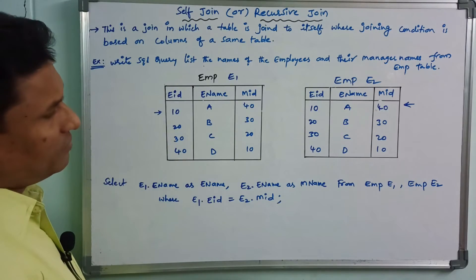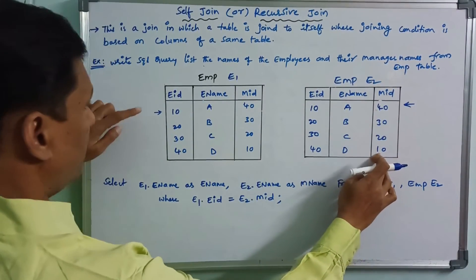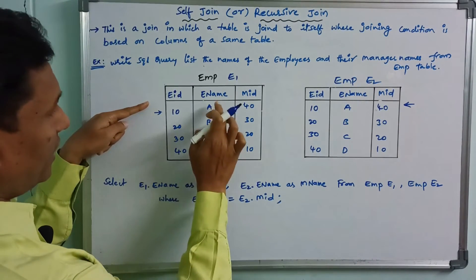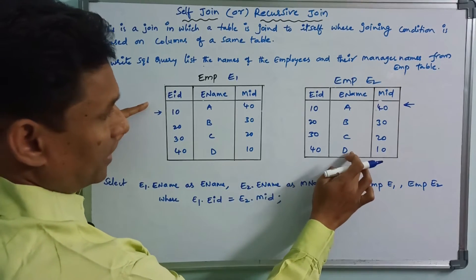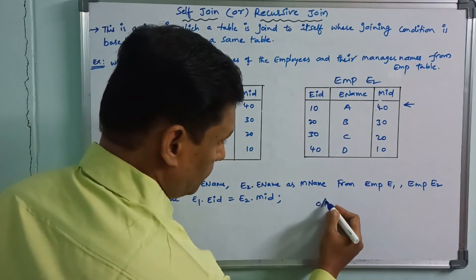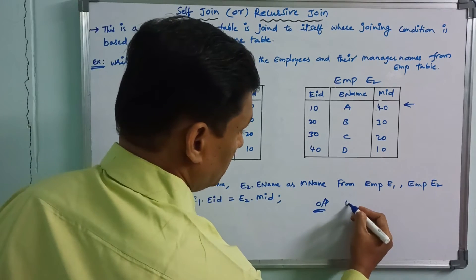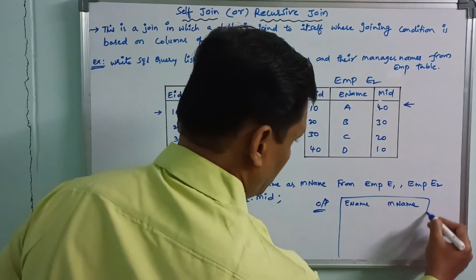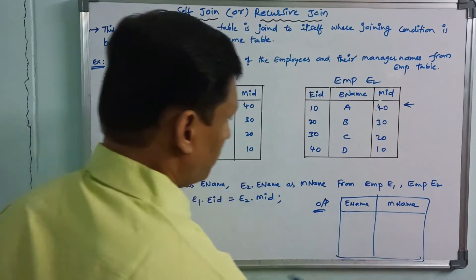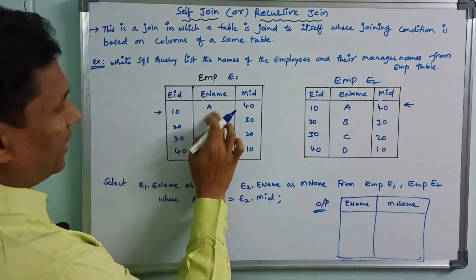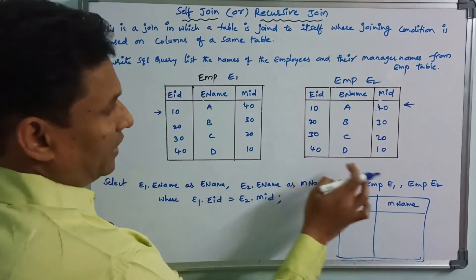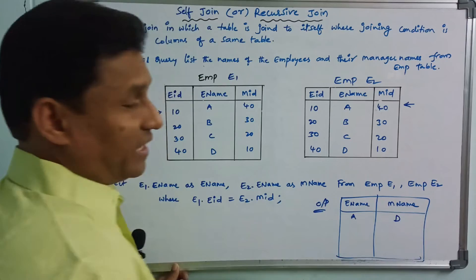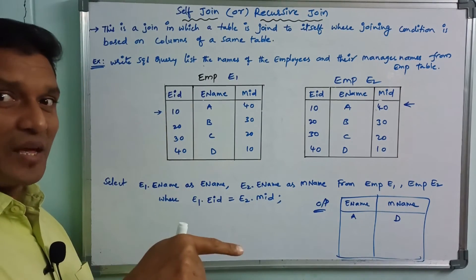Understanding this is key — you should know the condition. First, checking record 10: E1.ename is matched. We get the output columns: ename and mname. For employee ID 10, the name is A, and we find the matching manager.